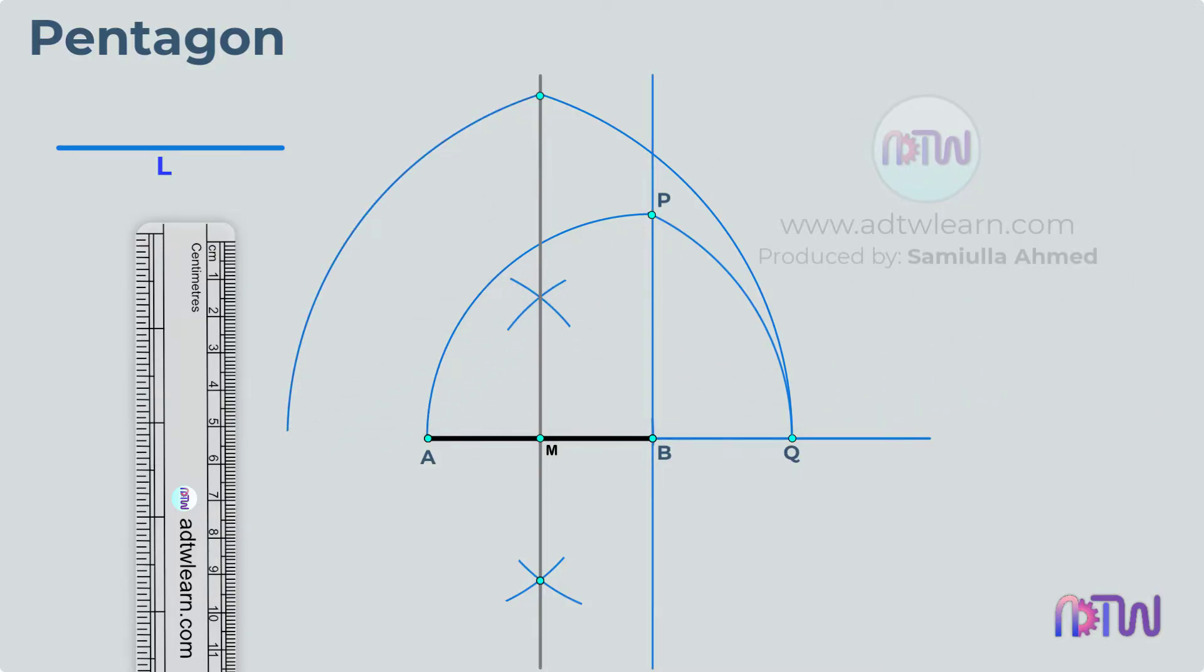After this, we will locate the other two points of the pentagon. To do so, adjust the length of the compass to length AB, and using point A as a center, cut an arc intersecting our previously drawn arc. Similarly, keep the compass at point B and cut an arc intersecting the previously drawn arc as shown here.